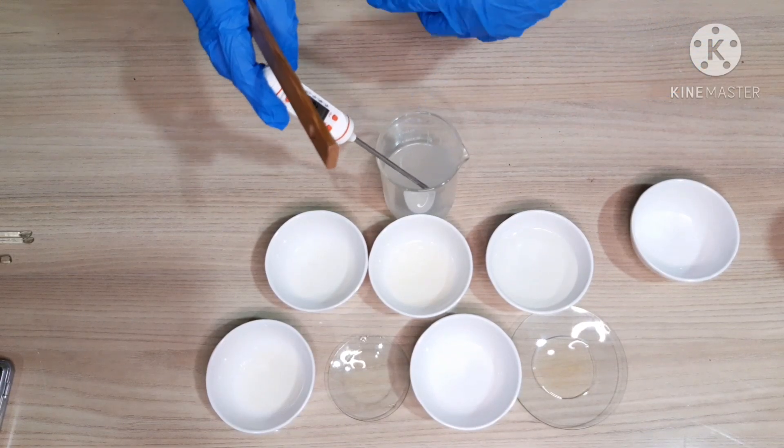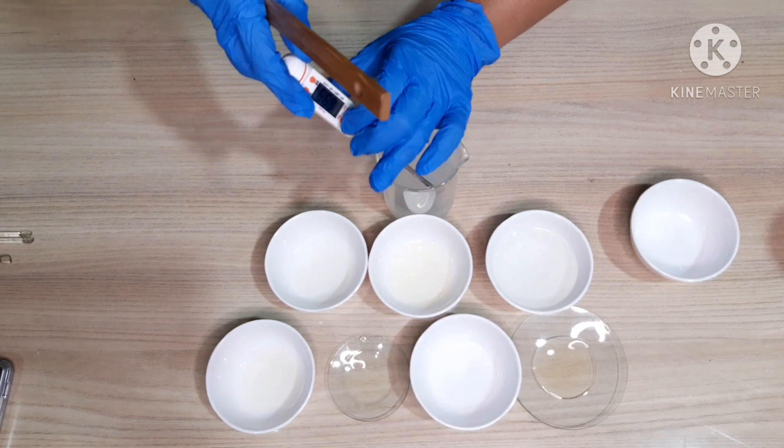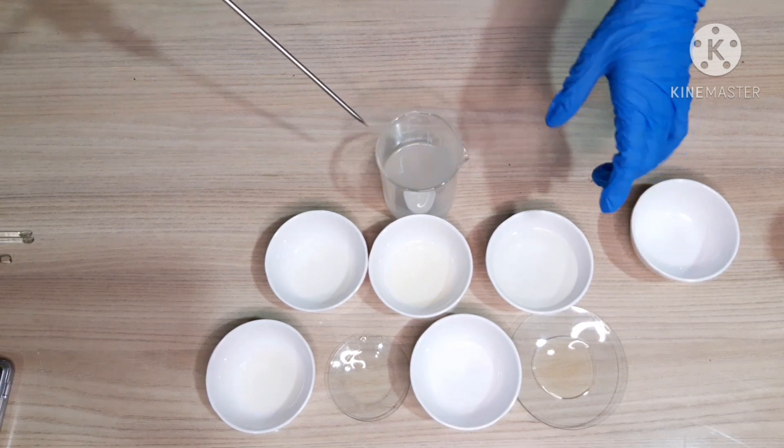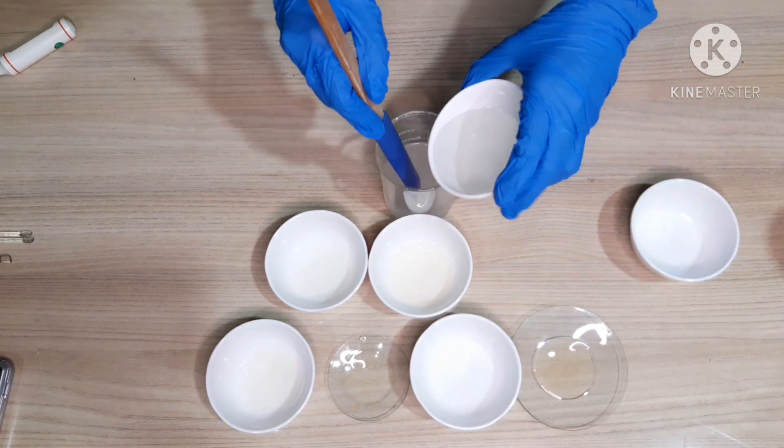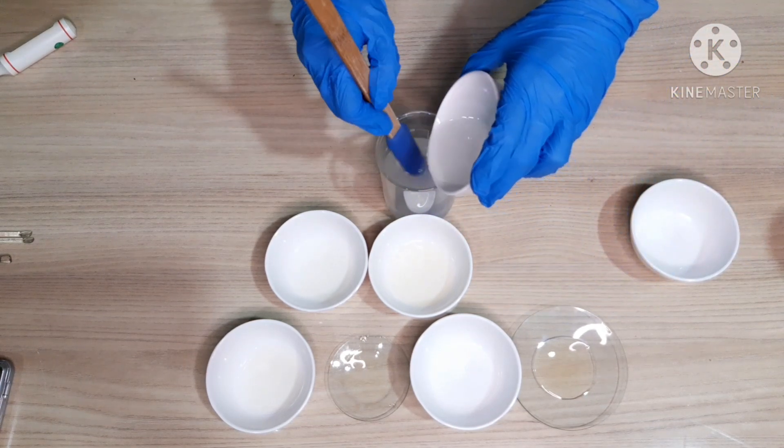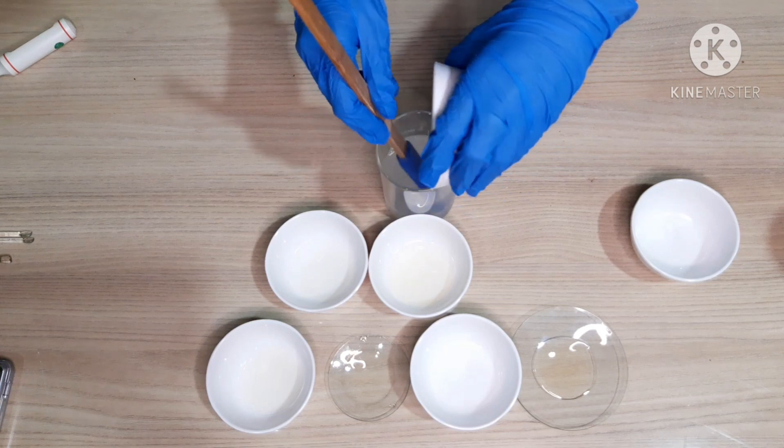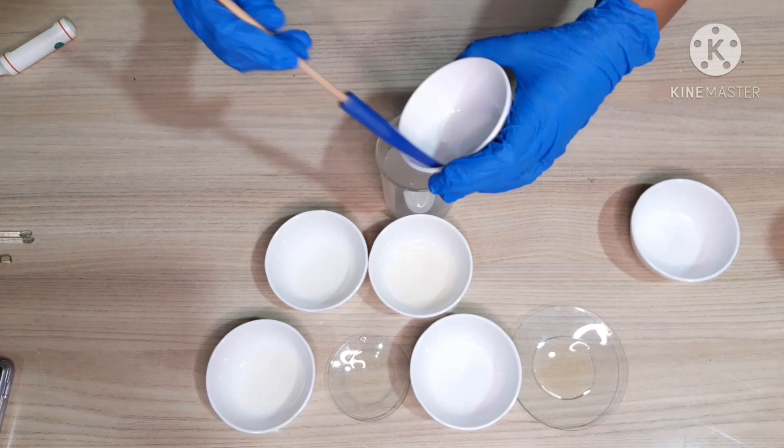You can see that it is 70 degrees Centigrade, so now I'll add coco betaine, slowly mixing it. If I mix it vigorously, it'll generate a lot of bubbles.